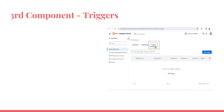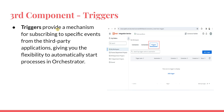The third component is Triggers. Triggers provide a mechanism for subscribing to specific events from the third-party application. For example, you receive an email from a certain vendor with a specific subject line, or in ServiceNow an incident gets created and tagged to a certain group — the moment that happens, you want a process to start and fix the problem or process a request automatically. You can subscribe to different events happening on the third-party application and based on that automatically start your automation in Orchestrator.